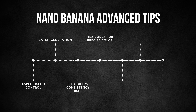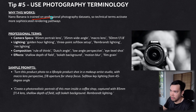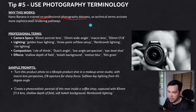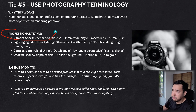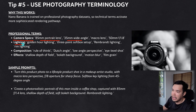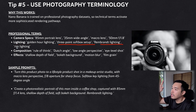What if you want precision in composition, lighting, and effects? That's where photography terminology comes in as tip 5. Gemini is trained on professional photography datasets, so technical terms activate more sophisticated rendering. You can define camera specs like lens type, aperture, and various lighting setups. If you're a photographer, this is especially powerful because you can essentially be the director.